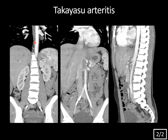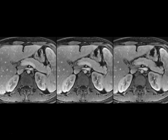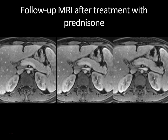These images show wall thickening involving the descending thoracic aorta continuing into the abdominal aorta and surrounding the superior mesenteric artery. Note the stenosis of the right renal artery, though there is no iliac artery involvement. Treatment is typically with corticosteroids. This patient had a follow-up MRI following treatment with prednisone, and the disease has almost completely resolved — just a little residual wall thickening about the aorta.